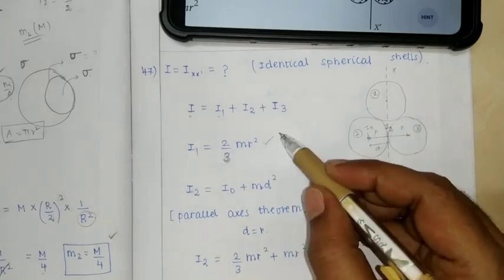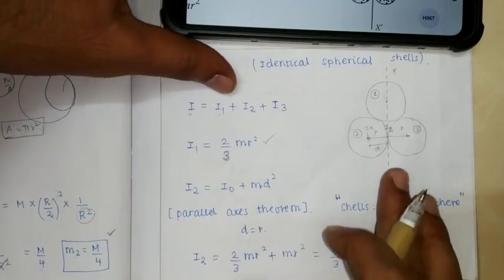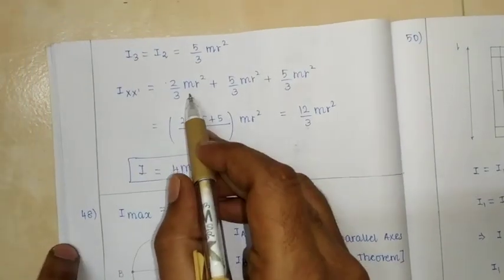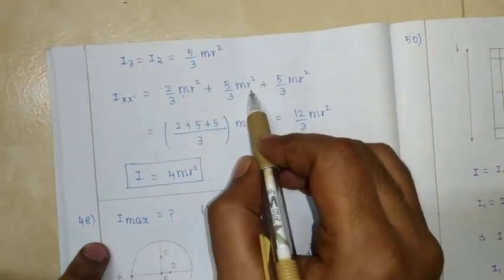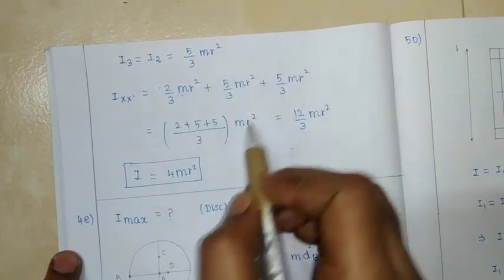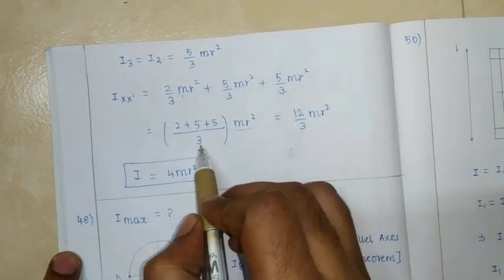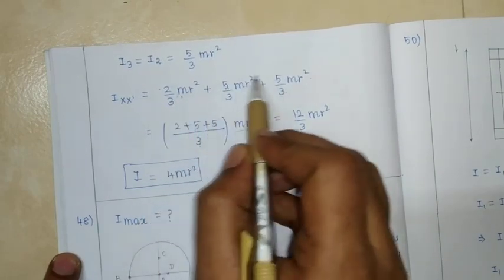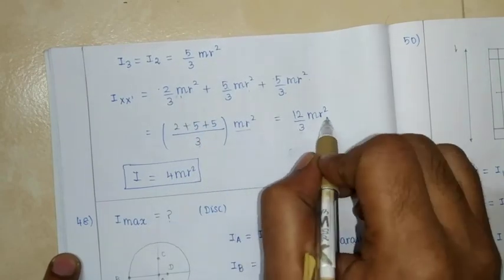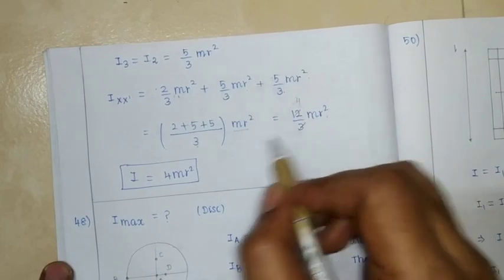I1 is 2/3 mr², I2 and I3 are both 5/3 mr². Total: 2/3 mr² plus 5/3 mr² plus 5/3 mr². With denominator 3, add numerators: 2 plus 5 plus 5 equals 12. So 12/3 mr², which simplifies to 4mr².